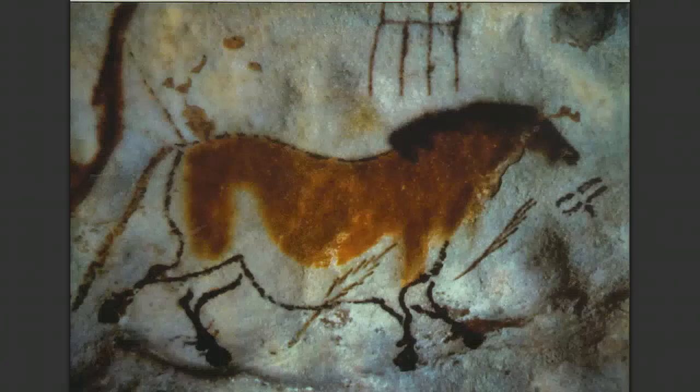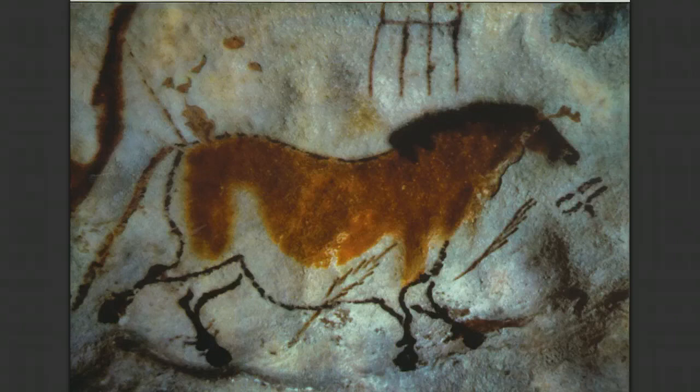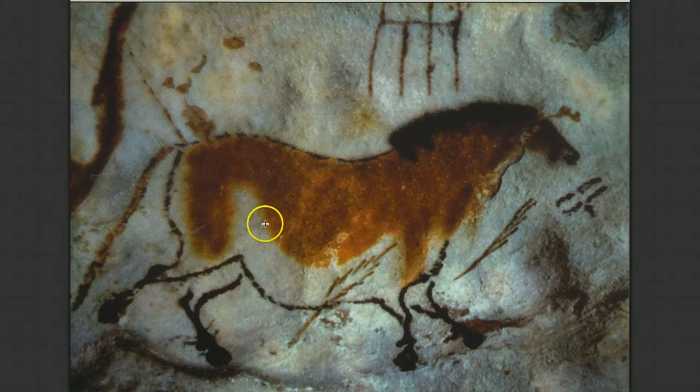One of the most famous images from the Caves of Lascaux is the Chinese Horse. I want to pause and focus on this image because it shows one of the most basic design elements. We're going to study the design elements in week two, but what we see here is a combination of line and value. We have the outline or contour of the Chinese Horse, and with value we have large areas of color that help give the shape form.